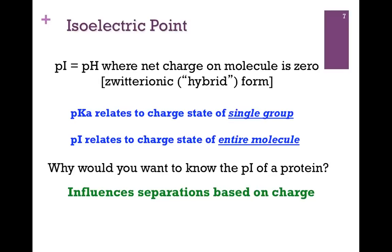So we've looked at this pH versus PK and the charge state of an individual group, but what about the charge on the overall molecule? For that, we want to look at the isoelectric point, or PI. This is the pH where the net charge on the molecule is zero. This is the zwitterionic form.